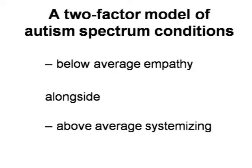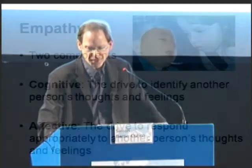The model I'm going to describe is a two-factor model to try to characterize at a psychological level individuals on the autistic spectrum. The argument is that any individual who ends up receiving a diagnosis of any level of severity on the autistic spectrum should have below-average empathy alongside intact or even above-average systemizing.